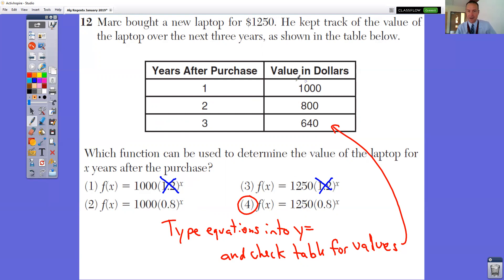But the easiest way to do this is to type them into the calculator and see which one matches the table of values. You could also just take a look at these. Notice that the original price was $1,250. The original price, where you start off at, is the number in front of the parentheses. So that's why this 1,000 would be wrong as well, because that's after year one, not the original number.